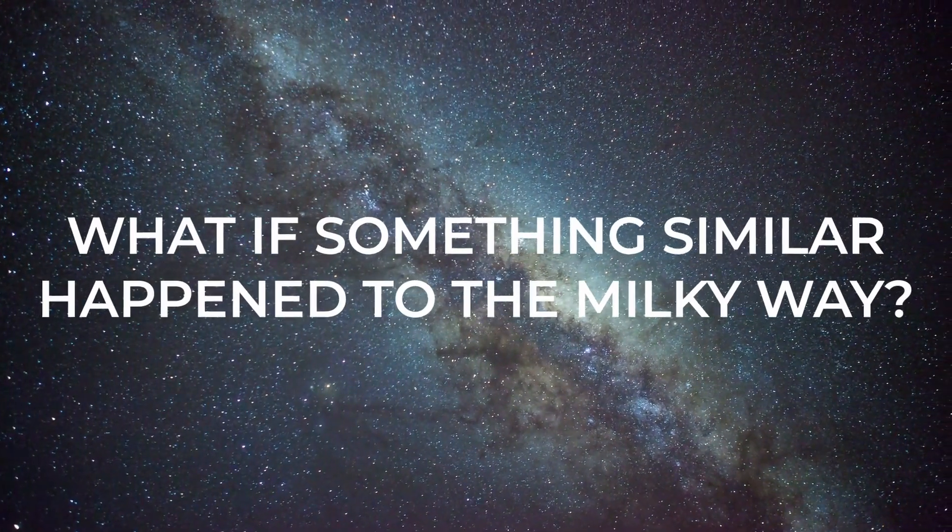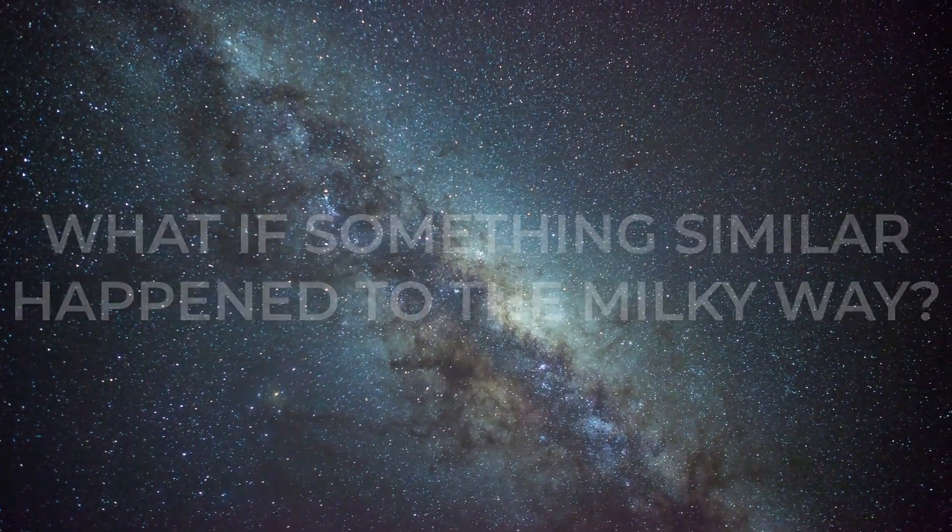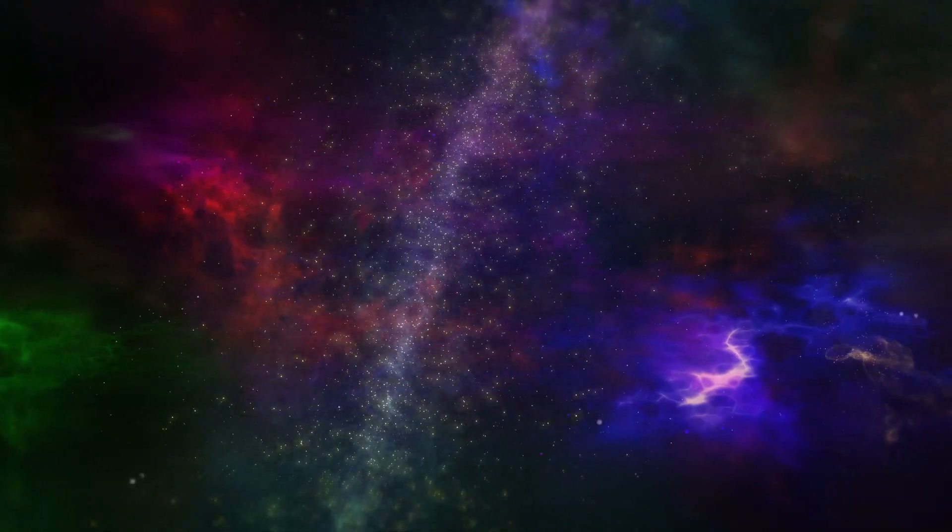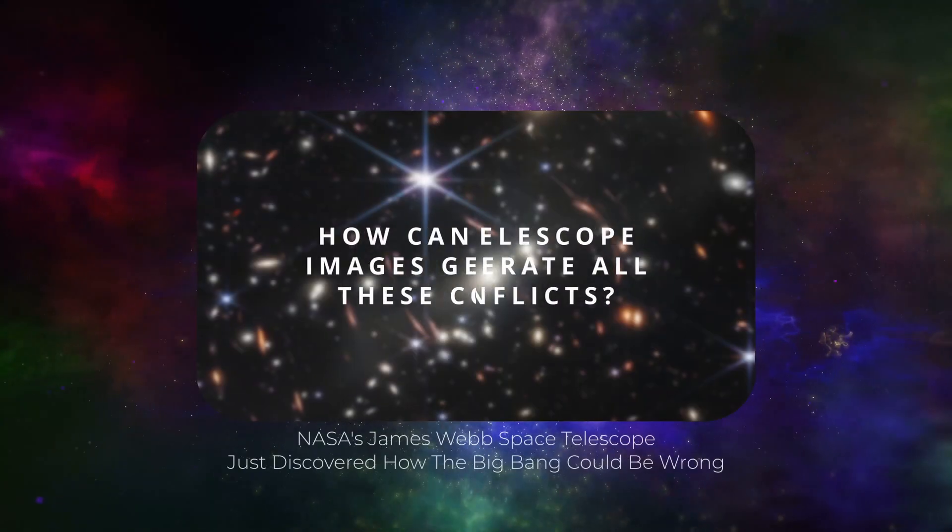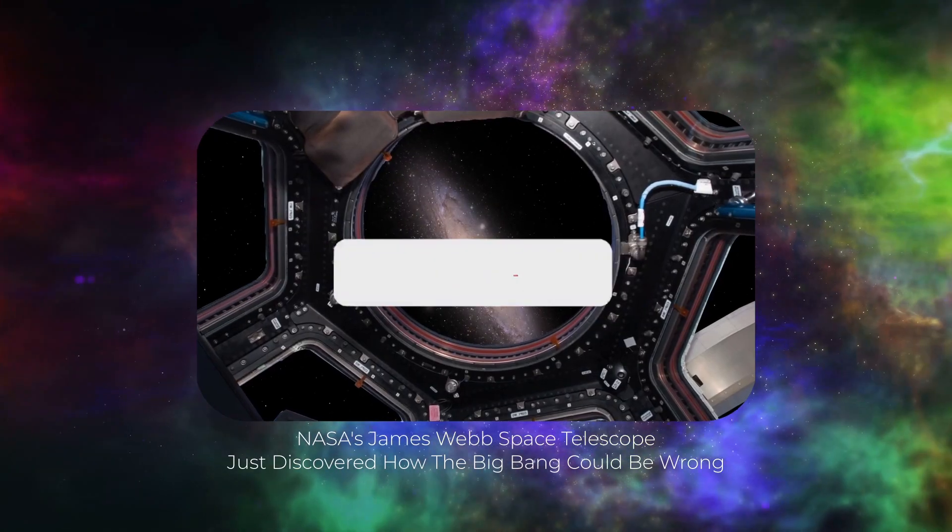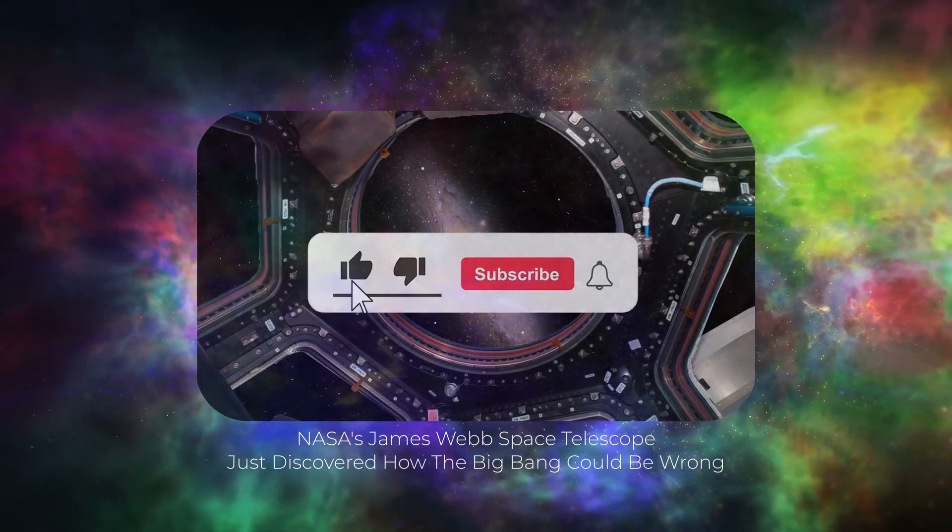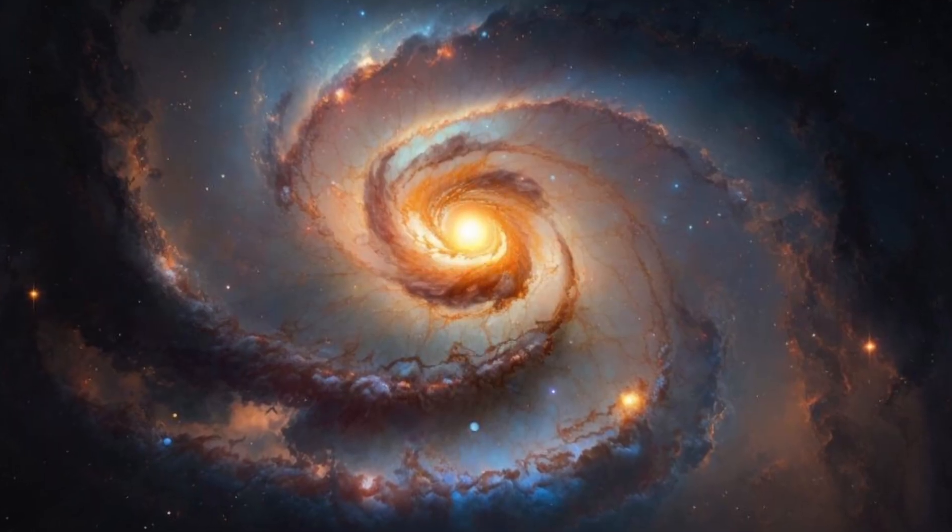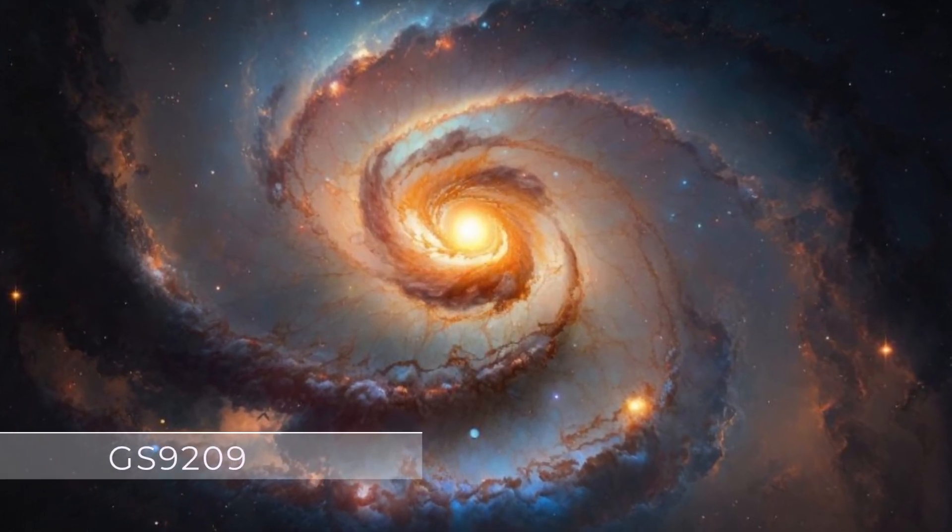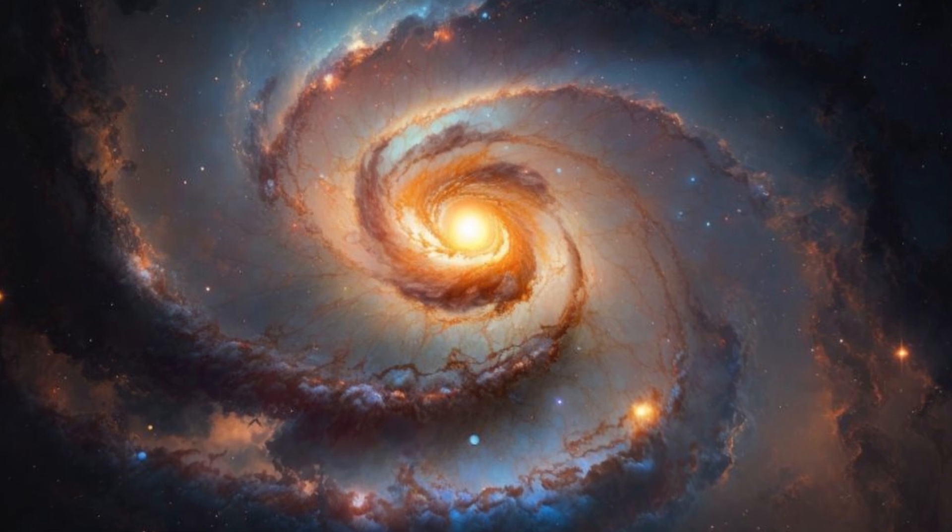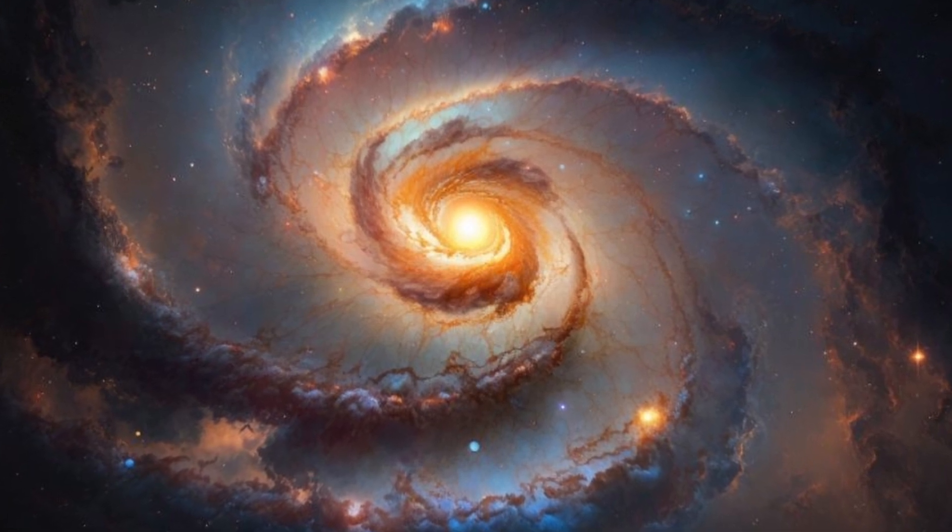What if something similar happened to the Milky Way? Find out at the end of the video. The same galaxy that we presented in the video, NASA's James Webb Space Telescope just discovered how the Big Bang could be wrong. The controversial GS-9209 continues to perplex researchers around the world for several reasons.